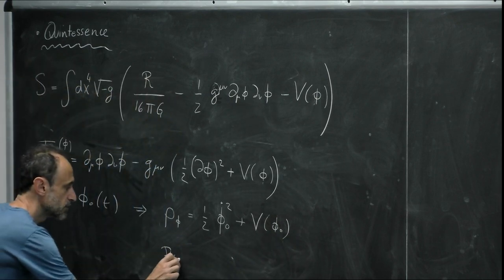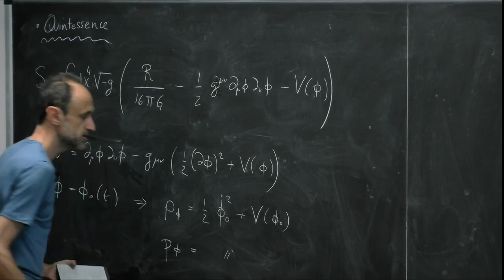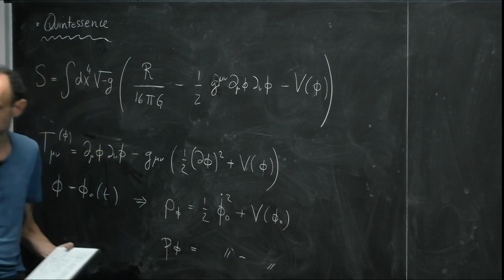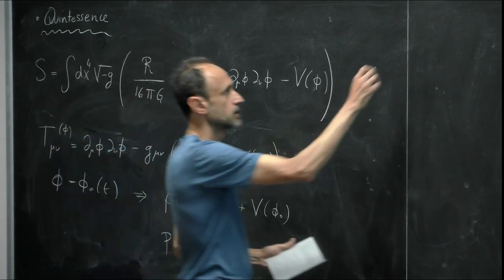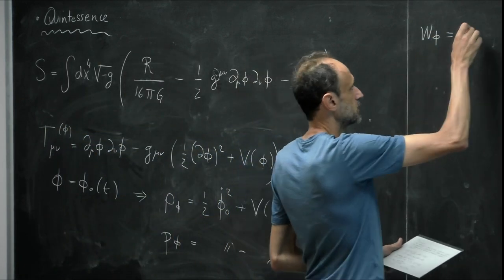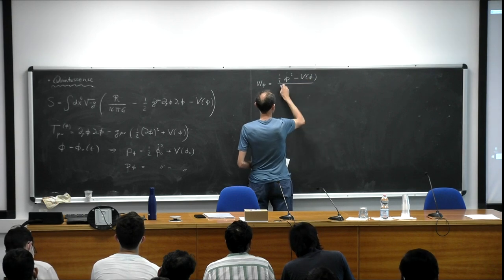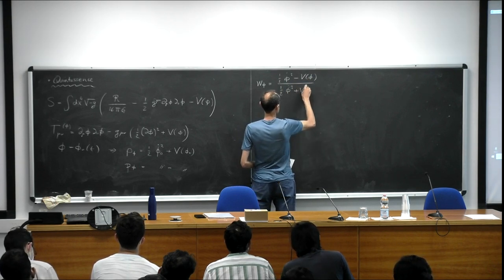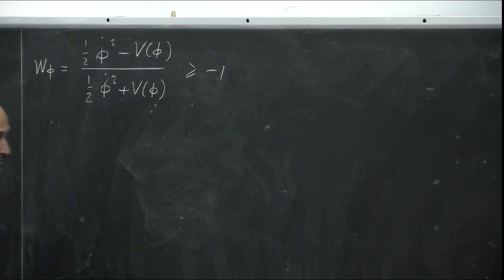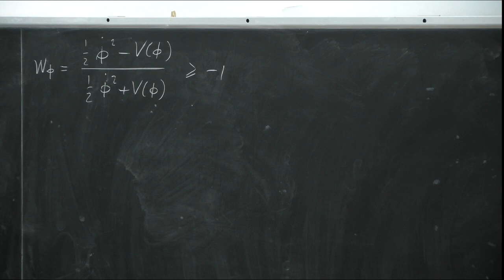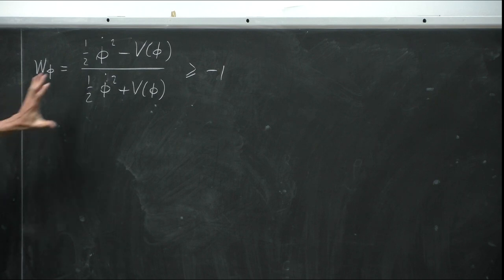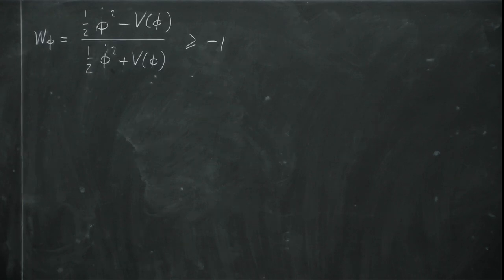The pressure is p(φ) = one-half φ̇² minus V(φ), so the equation of state is w = (one-half φ̇² − V) / (one-half φ̇² + V). This can equal minus one in the cosmological constant limit — when the scalar field is perfectly constant and we can neglect the kinetic term. In other cases, the equation of state parameter will be slightly more than minus one.